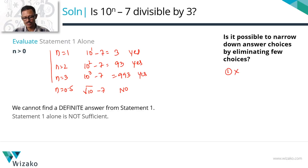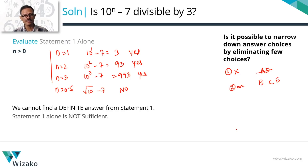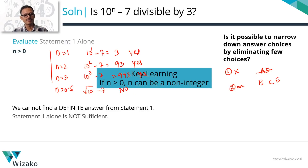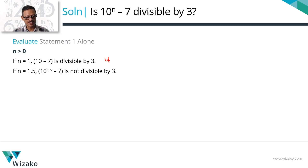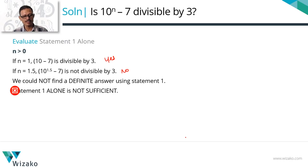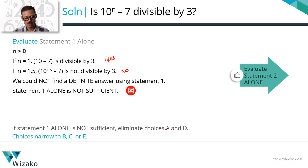Since statement 1 is not sufficient, eliminate A and D. Key learning: if n > 0, n can also be a non-integer such as 0.5 — do not miss those cases. Summary: with n > 0, when n = 1 the answer is yes; when n = 1.5 the answer is no. No definite answer. Statement 1 alone is not sufficient. Answer choices narrow to B, C, or E.